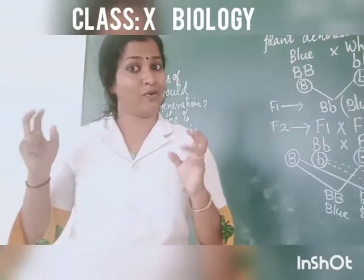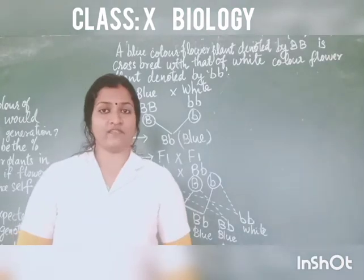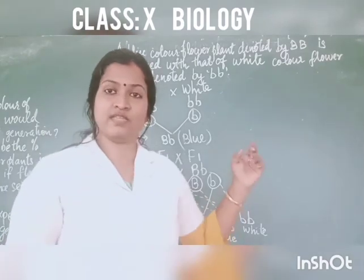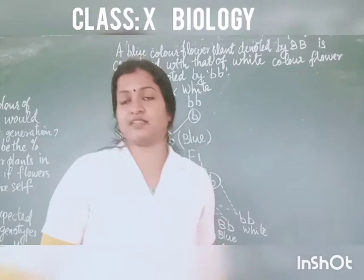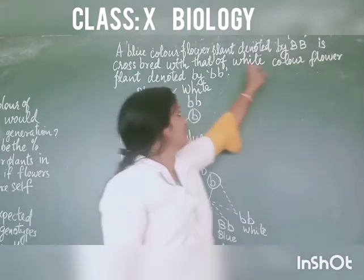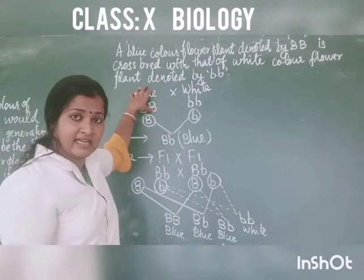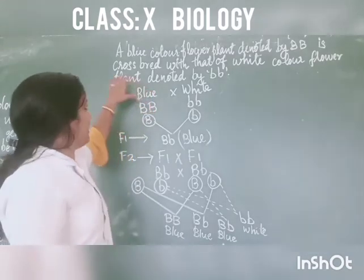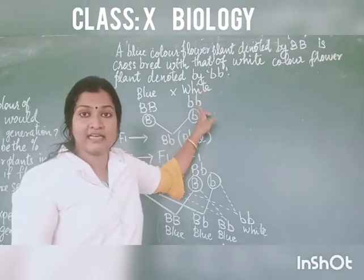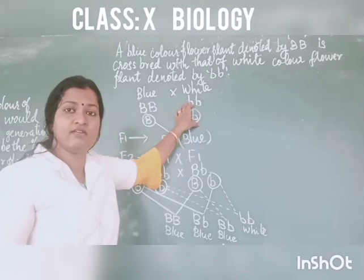This question is very similar to our monohybrid cross done in the last class — tall crossed with short. We always give capital letters to the dominant character and small letters to the recessive character. So here capital B, capital B represents blue color, which is the dominant character. White flower color is represented by small b, small b — white color is the recessive character.